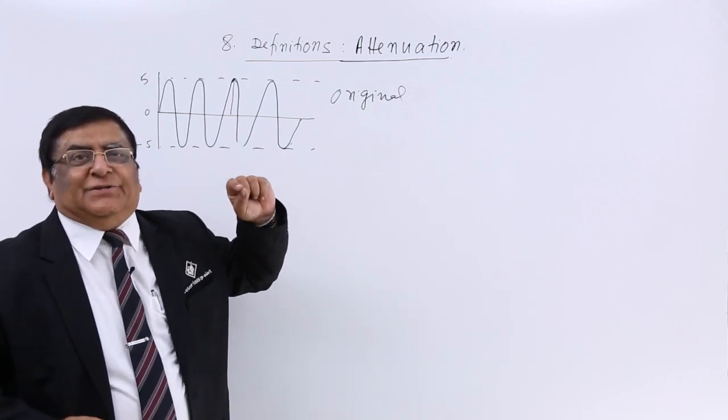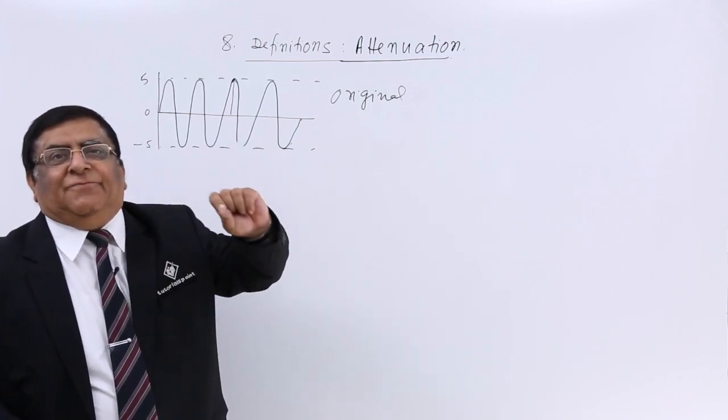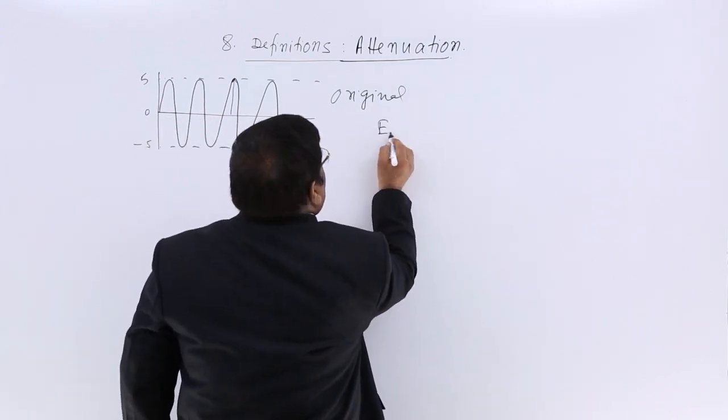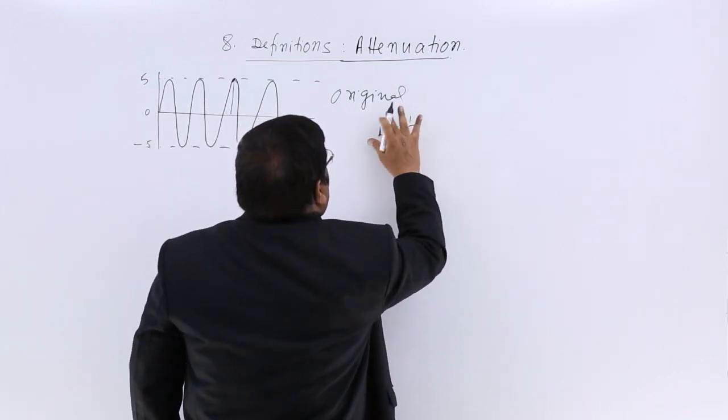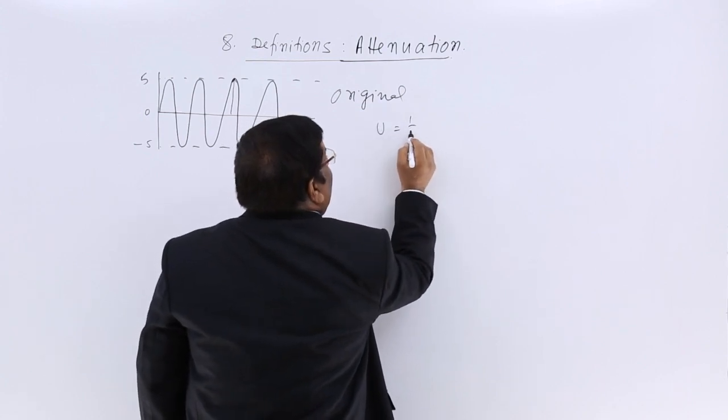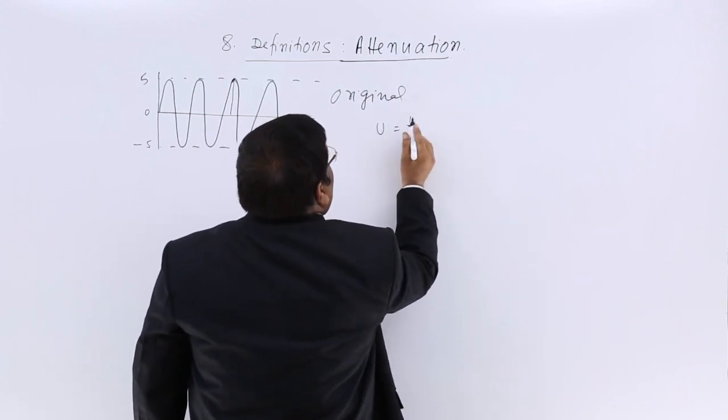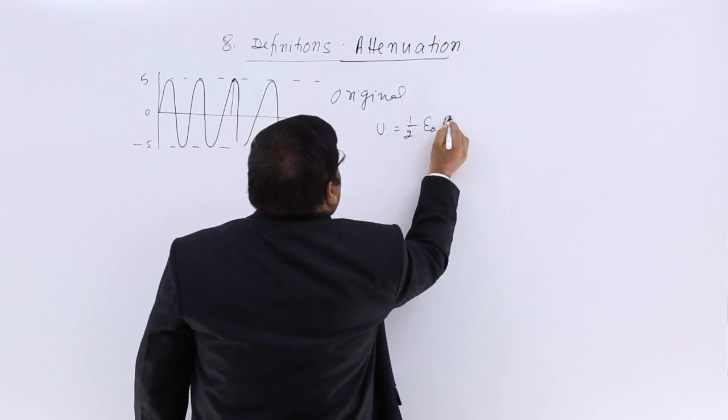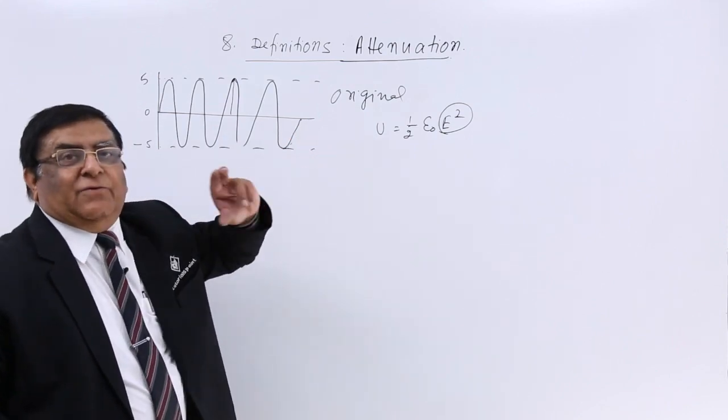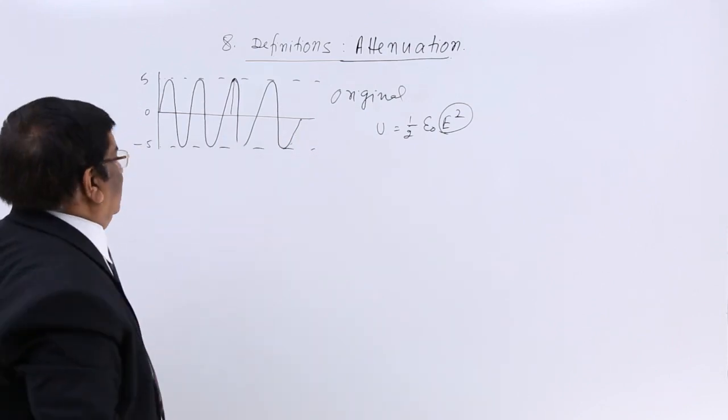Because some energy is lost. If energy is lost, we know energy per unit volume in an electromagnetic wave is half epsilon naught e squared. This electric field factor of the electromagnetic wave—its amplitude becomes less.